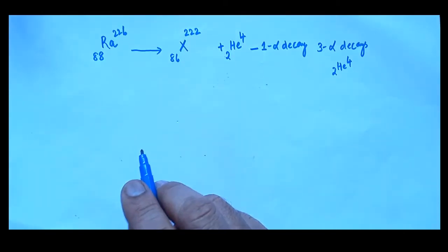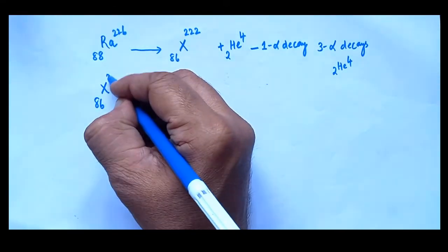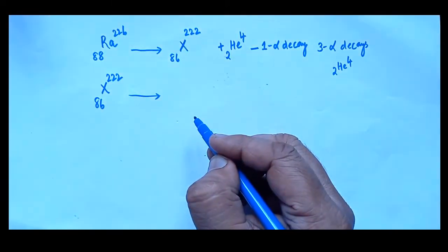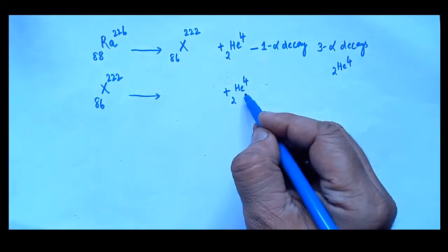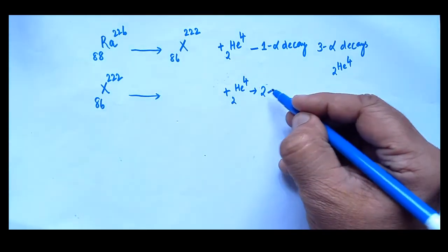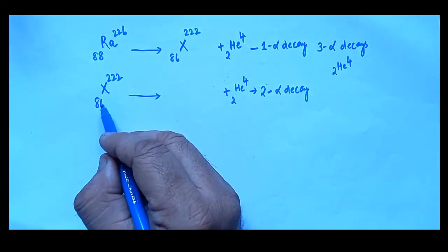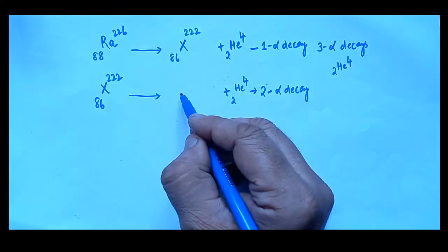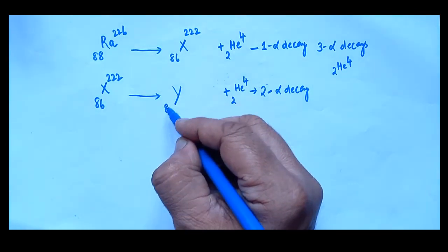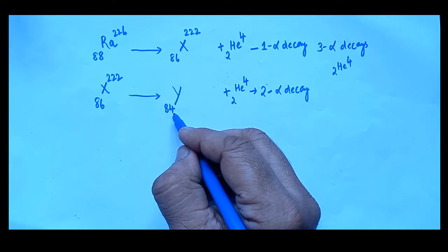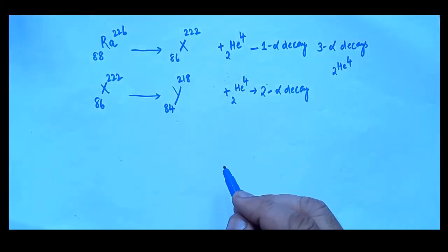Now moving to the second alpha decay process. The daughter element X with atomic number 86 and mass number 222 undergoes another alpha decay, emitting another 2He4. Step by step we proceed to avoid errors. When this element emits one alpha particle, the new daughter element Y has atomic number 84 (reduced by 2) and mass number 218 (reduced by 4). The second alpha decay process is now complete.